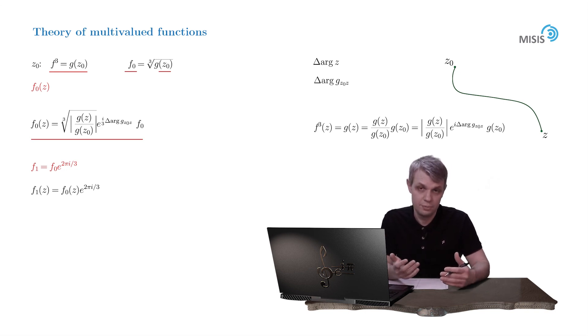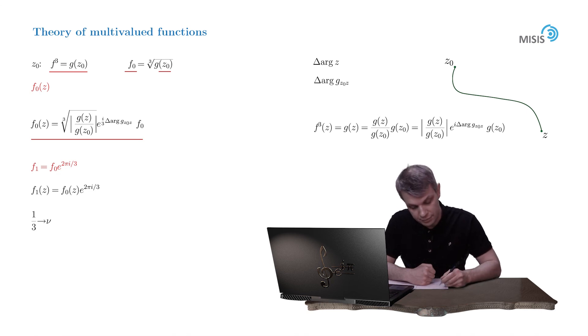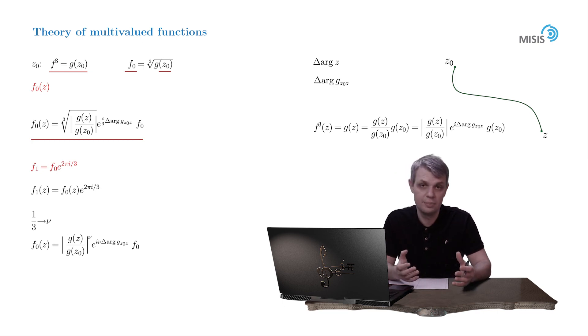And of course the same goes for the third regular branch. And naturally this technique is independent of a particular power which defines our multivalent function. Here we dealt with one third power cubic root, but of course it can be any arbitrary real or even complex power. All the steps will remain the same. For example, for the nu power we'll have very similar expression for the regular branch of a multivalent function. We'll have f of z would be equal to the modulus of the ratio of g of z and g of z naught to the power of nu, and then of course we'll have exponential i nu delta argument of g once we travel from z naught to z, and the value of the function at point z naught. And now we'll apply this technique to more specific examples.